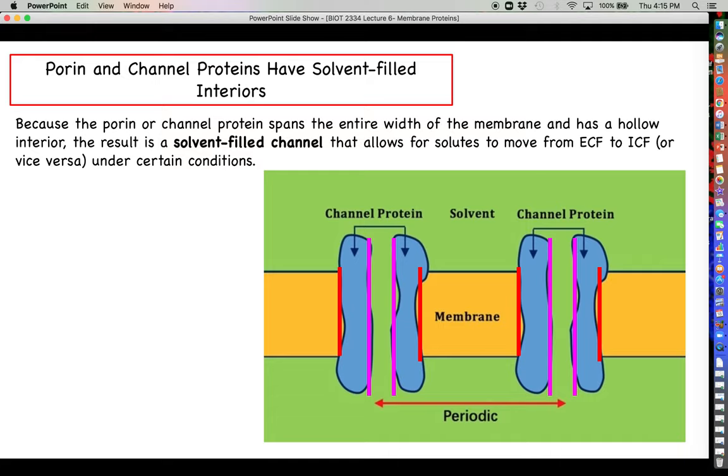Because the porin or channel protein spans the entire width of the membrane and is hollow, the result is a solvent-filled channel, meaning the interior is actually a very hydrophilic-friendly environment. That's why we expect those hydrophilic side chains to be projected towards the hollow interior. The pink areas should be hydrophilic, and the red portions, the exterior of the beta barrel structure, should have the hydrophobic side chains exposed to the fatty acid tails of the phospholipid bilayer.